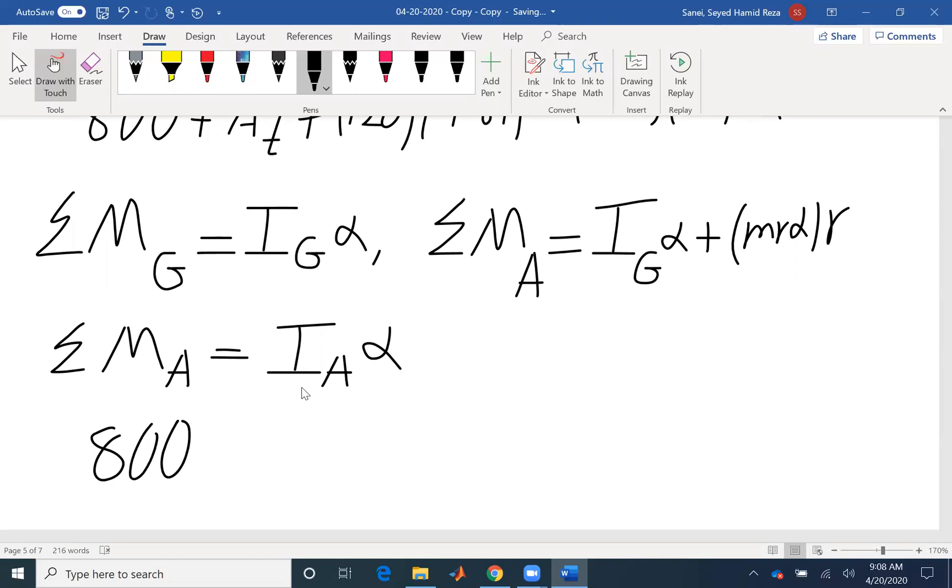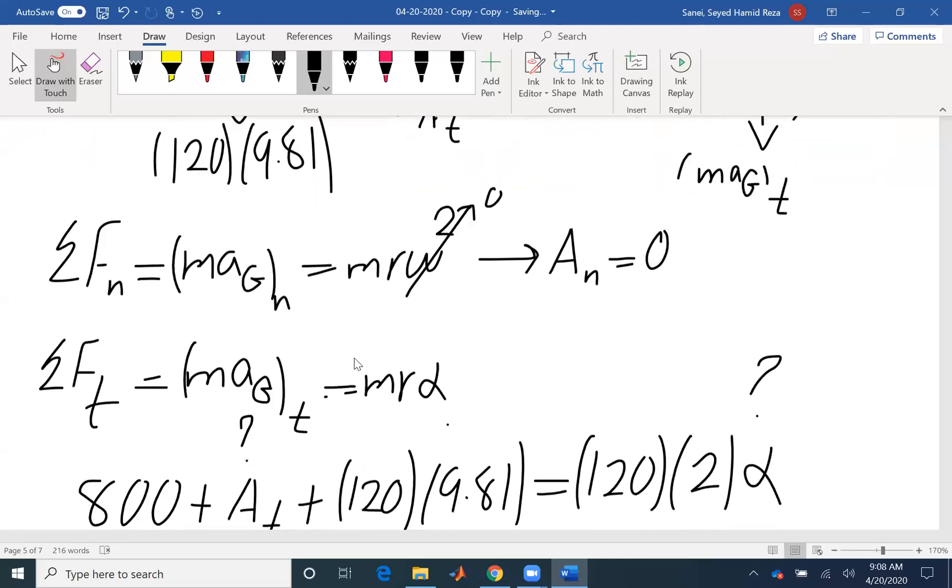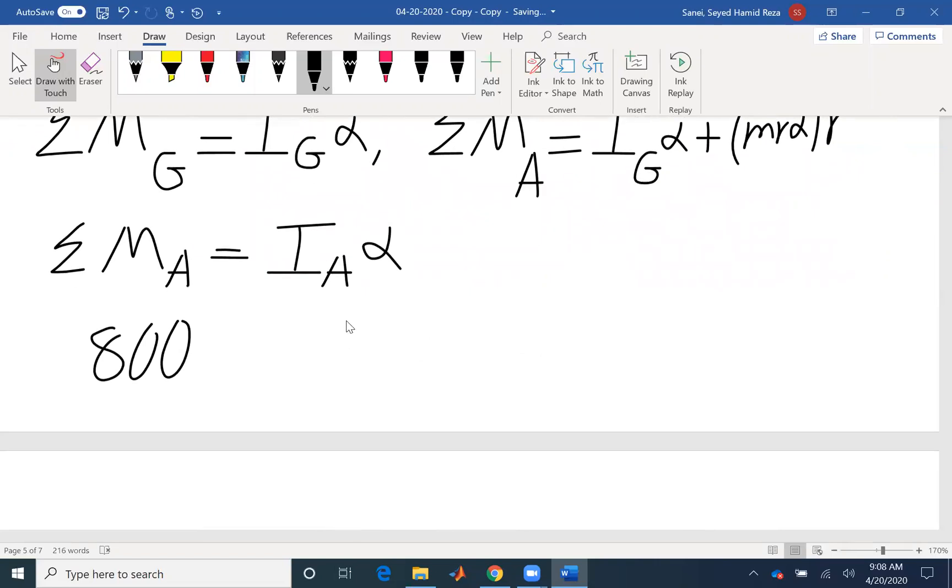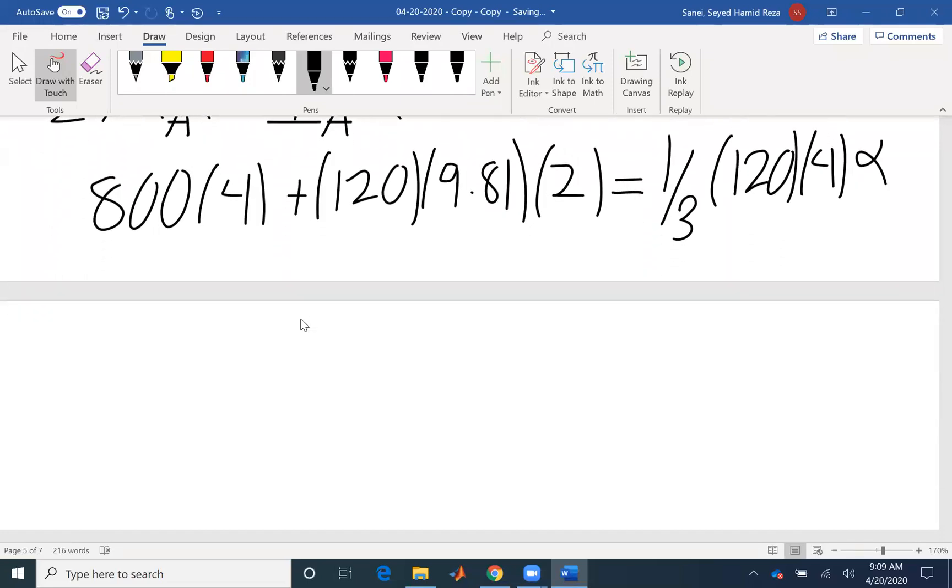Here, the force 800, the moment arm is 4. It's counterclockwise positive. 800, the moment arm is 4. The weight is also creating a positive moment. And the mass is 120 times g, the moment arm is 2 because it's acting in the middle of the beam. Then I, which is one-third, M, 120, L, the total length of the beam, 4 squared alpha. If you look at it, the only unknown that I have is alpha, which I find it to be 8.68 radians per second squared.